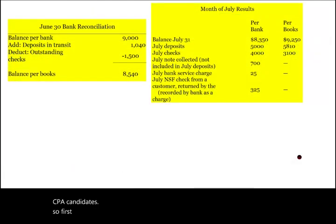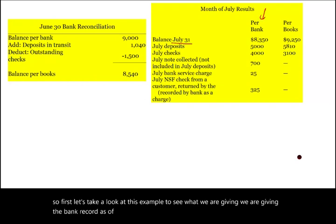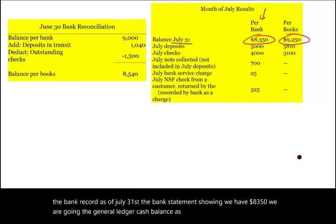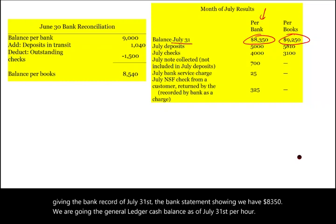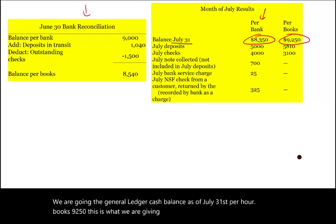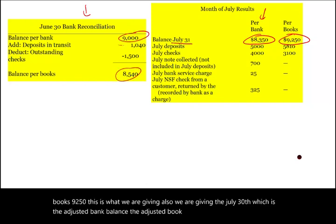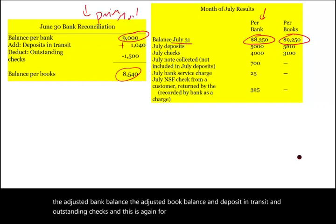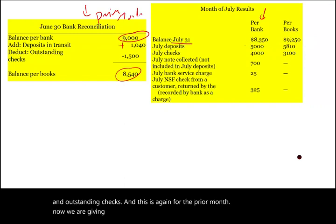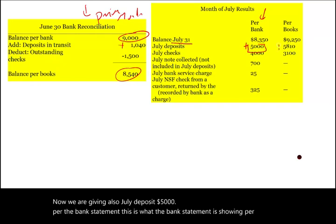Let's take a look at this example to see what we are given. We are given the bank record as of July 31st — the bank statement is showing $8,350. We are given the general ledger cash balance as of July 31st per our books as $9,250. We are also given the June 30th adjusted bank balance, adjusted book balance, deposit in transit, and outstanding checks for the prior month. Additionally, July deposits are $5,000 per the bank statement and $5,800 per books.